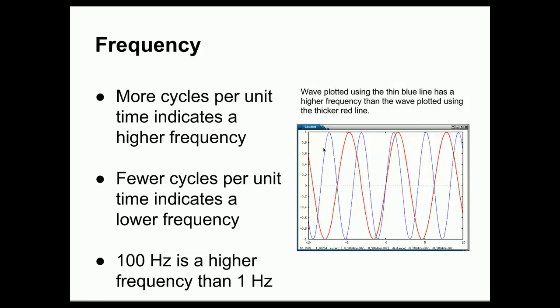Now if we have a wave that goes up, down, and comes back more frequently within the same time span, then we say that wave is a higher frequency wave. More cycles per unit time is a higher frequency. So a 100 hertz wave, for example, is a higher frequency than a 1 hertz wave. And in my example, the wave in blue is a higher frequency wave than the wave in red. Because in the time span of this plot, the blue line representing the blue wave goes up and down and completes more cycles in that same amount of time than does the red wave.